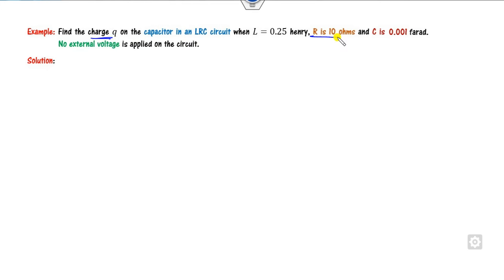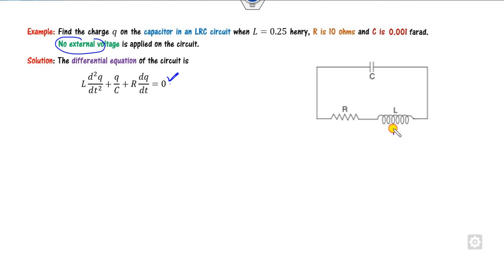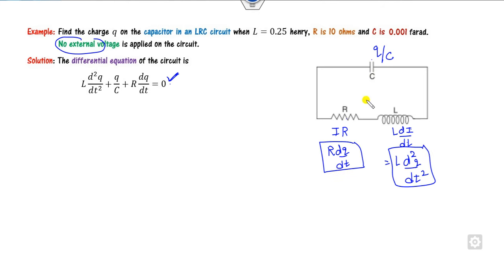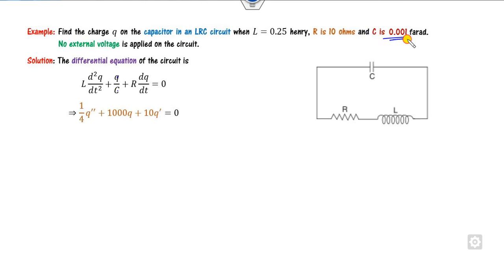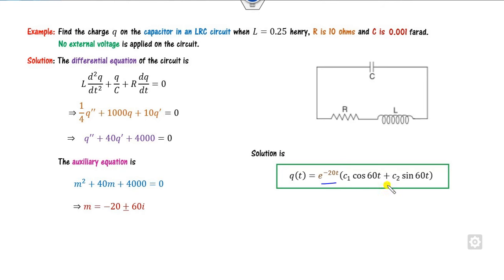Example 2: Find Q for an LCR circuit with given R, C, and L, with no external voltage applied. Writing the series structure equations: L·d²Q/dt² + R·dQ/dt + Q/C = 0. Substituting the values of R, L, and C, simplifying gives a second-order differential equation. Since the roots are complex, write the solution in the appropriate form. With no right-hand side this is the complete solution.